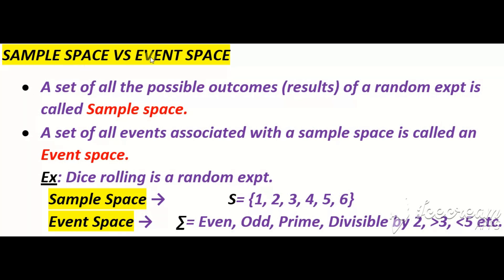That is: what is the difference between sample space and event space? It is very simple — a set of all the possible outcomes, all the probable outcomes, all the possible results of a random experiment is actually called sample space. جب ہم random experiment perform کرتے ہیں تو اس کے جتنے بھی possible results اور probable outcomes ہوتے ہیں، جب اس کو ہم ایک set form میں لکھتے ہیں تو اس کو sample space کہتے ہیں۔